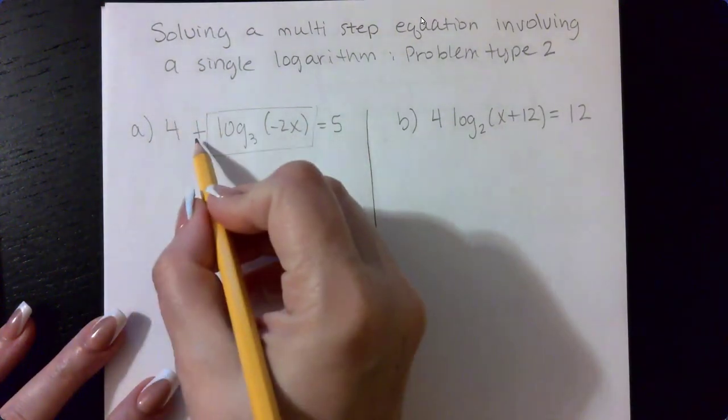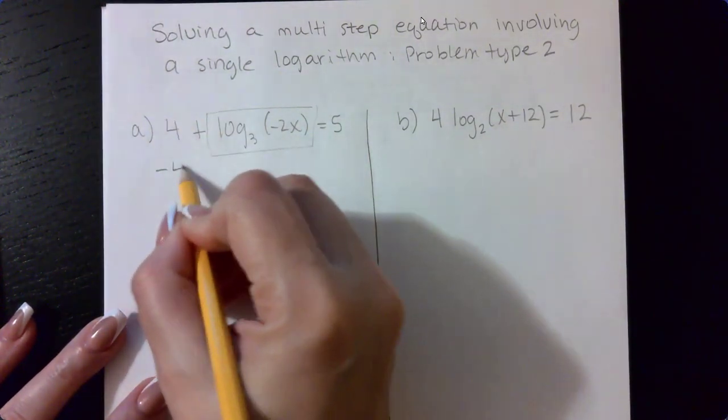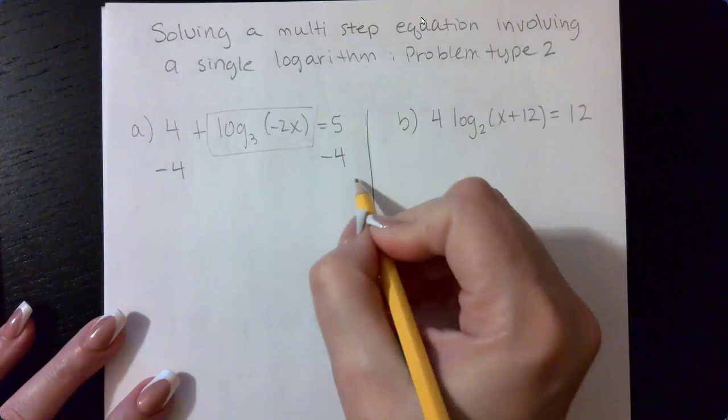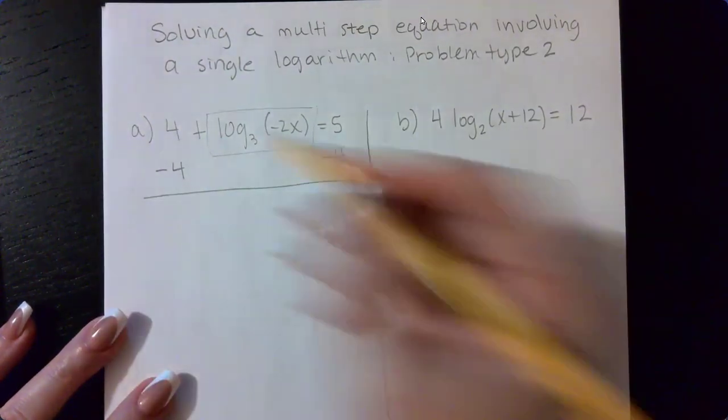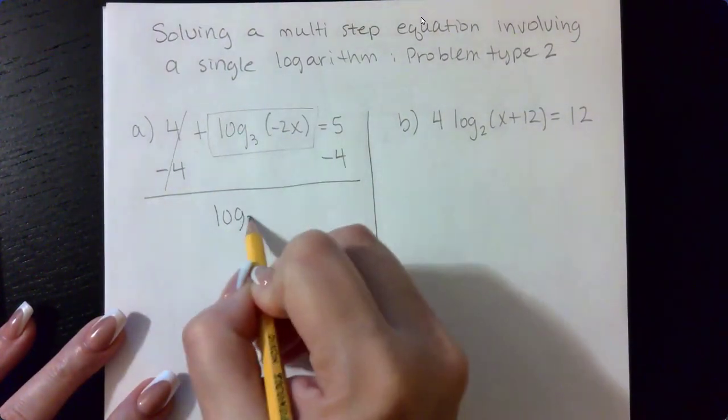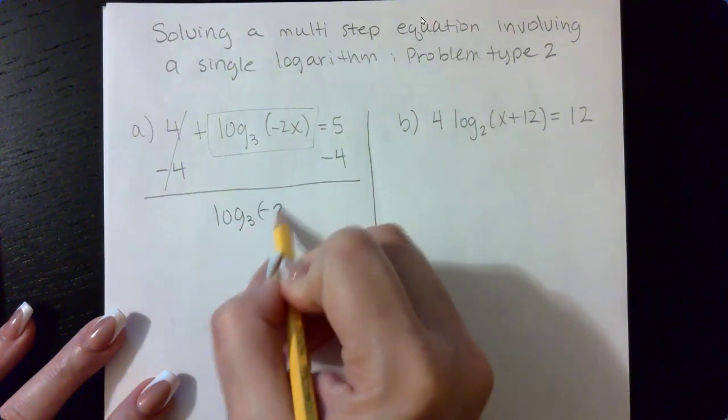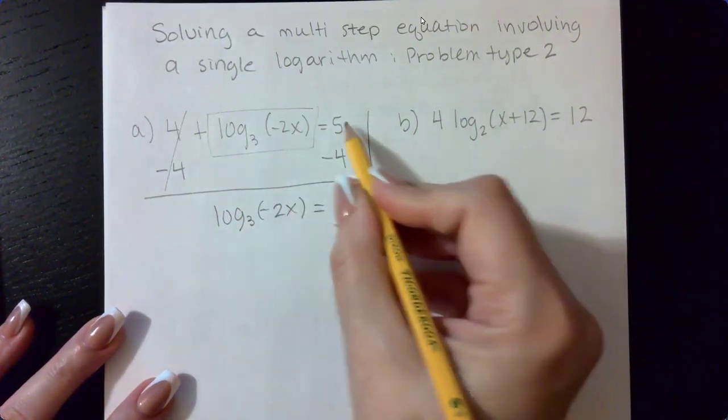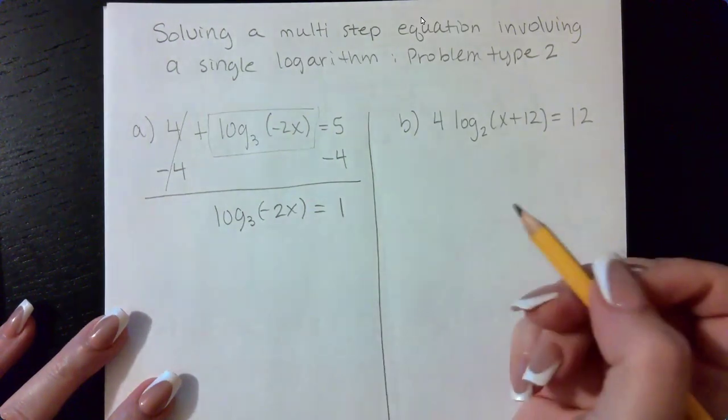And the way to eliminate addition is to subtract 4. And what I do to one side of the equation, I must do to the other side. So I end up with the logarithmic expression equal to now 5 minus 4 is just 1.